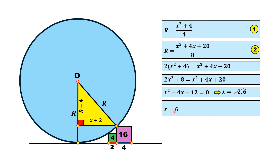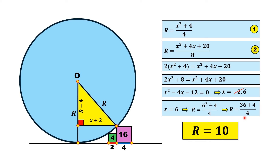Substituting x equals 6 into Equation 1: r equals (6 squared plus 4) over 4, which equals (36 plus 4) over 4, equals 40 over 4. After simplification, r equals 10. That is the answer. Thank you for watching.